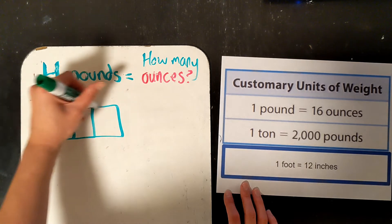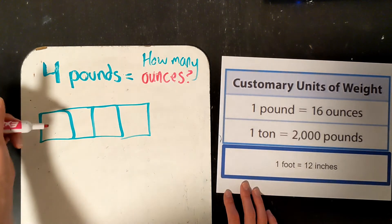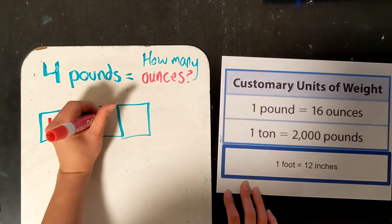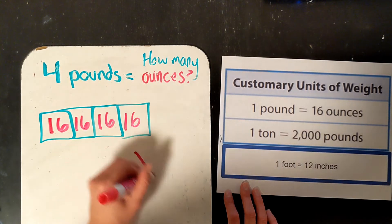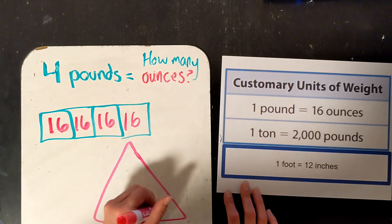So take that 16 four times to figure out how many ounces are in 4 pounds. 1, 2, 3, 4 pounds. 16 ounces in each. That is how we know we are multiplying. 16 ounces in each.